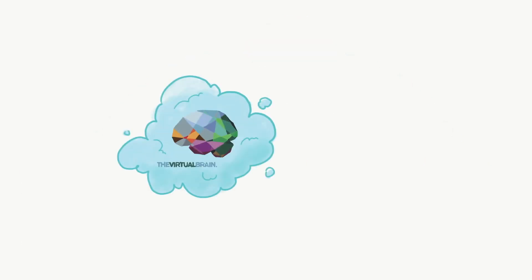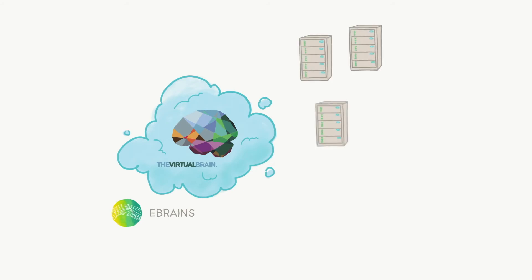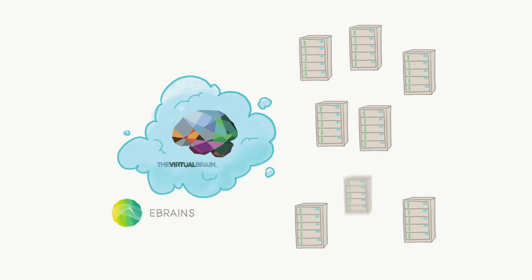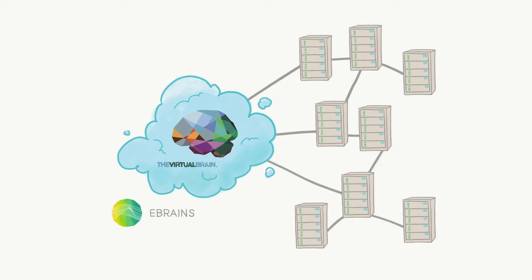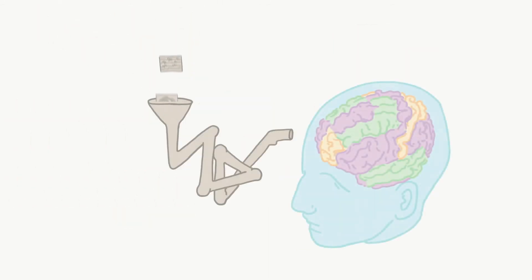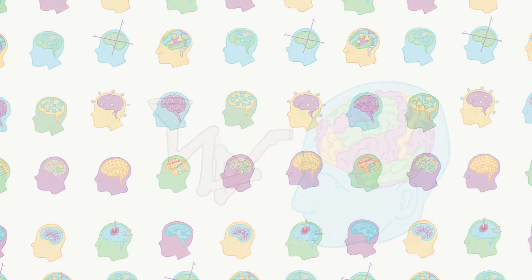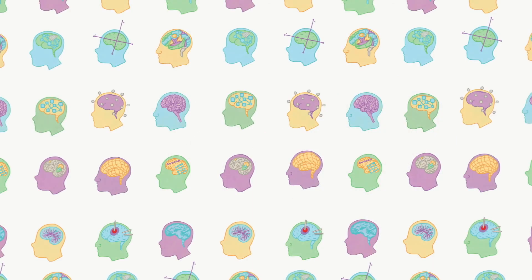The Virtual Brain ecosystem on eBRAIN's contains The Virtual Brain Simulator, which can be used in the cloud with a supercomputing back-end. It also includes ready-to-use pipelines to build personalized brains, enabling users to process their own imaging data or shared data with large cohorts.